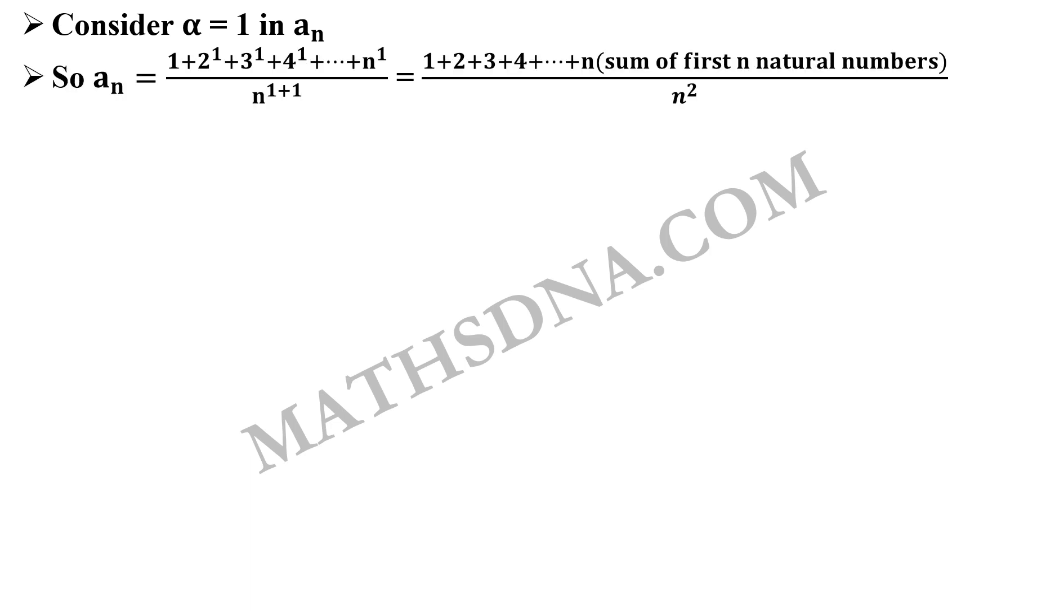Be very careful over here when you are using examples to eliminate the options. Now let us take alpha equals to 1 in our a_n. This will give you 1 plus 2 raised to 1 plus 3 raised to 1 up to n raised to 1 upon n raised to 1 plus 1. So the numerator is the sum of first n natural numbers and denominator is n square. Further simplifying this gives us that sum of first n natural numbers we all know that it is n into n plus 1 by 2 divided by n square and if we further simplify it gives us n square into 1 plus 1 by n divided by 2 n square and now if we apply the limit n tends to infinity to our a_n it is equals to 1 by 2.